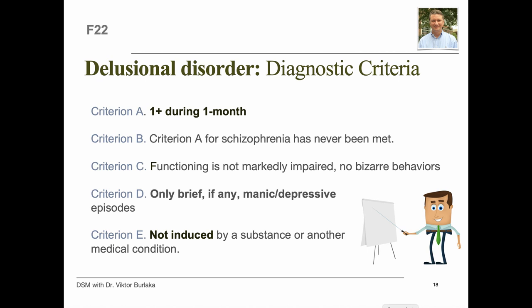Criterion C states that apart from the impact of the delusion or its ramifications, functioning is not markedly impaired and behavior is not obviously bizarre or odd. Criterion D states that if manic or major depressive episodes have occurred, these have been brief relative to the duration of the delusional periods. Criterion E states the disturbance is not attributable to the physiological effects of drugs, medication, or another medical condition.